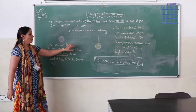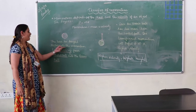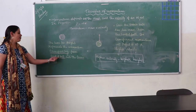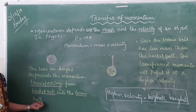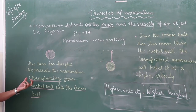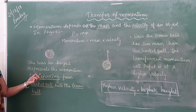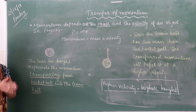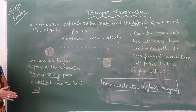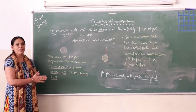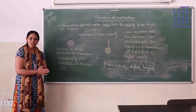Why is it so? It is because the transfer of momentum takes place from the basketball to the tennis ball. Since the mass of the tennis ball is small, its velocity is high, and therefore it goes to a greater height. I hope you understand how the transfer of momentum takes place. Thank you for watching.